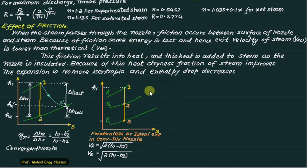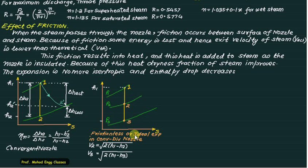For convergent-divergent nozzle problems there are three common types. Type one: the entire flow is frictionless, meaning inlet (1), throat (2), and exit (3) lie on the same vertical isentropic line with s1 equals s2 equals s3. The velocity at the throat is V2 equals the square root of 2(h1 minus h2) and at exit V3 equals the square root of 2(h1 minus h3).